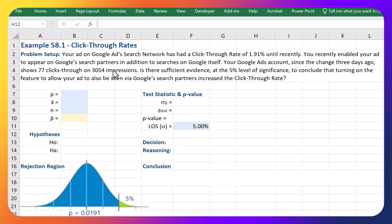Question we're looking to answer is, is there sufficient evidence at the 5% level of significance to conclude that turning on the feature to allow your ad to be seen via Google search partners increased the click-through rate? So have we increased the click-through rate by turning on this feature with basically 95% confidence or only a 5% chance of error?